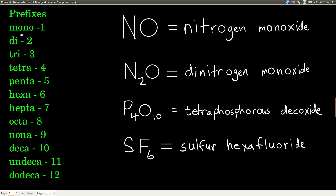So these are the prefixes — memorize these. Mono means 1, di means 2, tri means 3, tetra 4, penta 5, hexa 6, hepta 7, octa 8, nona 9, deca 10, undeca 11, dodeca 12.